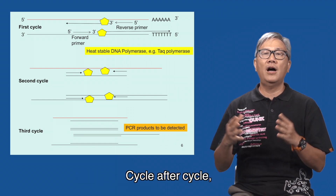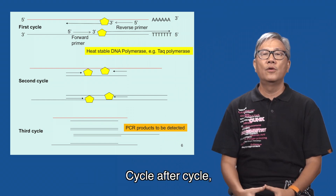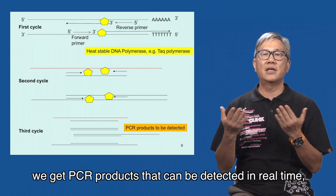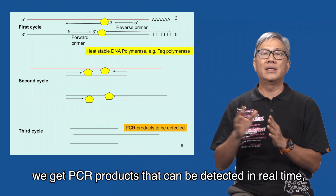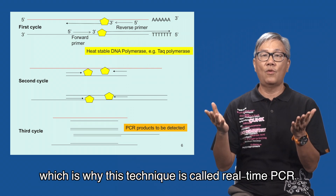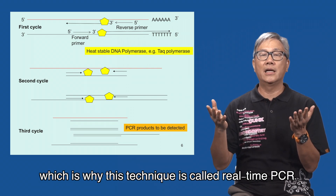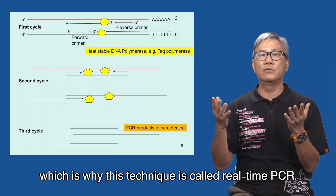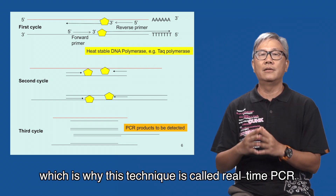Cycle after cycle, we get PCR products that can be detected in real-time, which is why this technique is called real-time PCR.